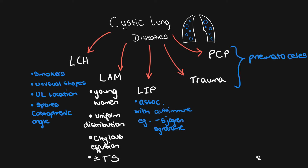The other thing to remember when you see cysts in the lungs is to make sure that it's not a pneumatocele. You can get traumatic pneumatoceles, and you can also get pneumatoceles in PCP. In PCP, you'll see perihilar ground glass change and reticular nodular opacification, and you'll see the pneumatoceles in the upper lobes.